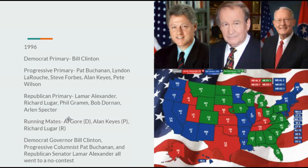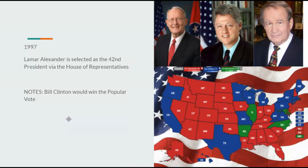Going on to 1996, Democrats nominate Bill Clinton, Progressives nominate Pat Buchanan again, and Republicans nominate Lamar Alexander. Running mates: Democrat Al Gore, Progressive Alan Keyes, Republican Richard Lugar. For the fourth time, no contest. In 1997, Lamar Alexander is elected as the 42nd President via the House of Representatives, though Bill Clinton would win the popular vote.